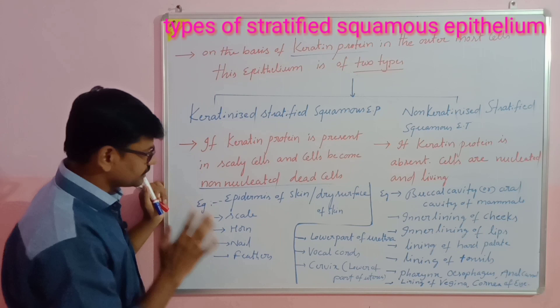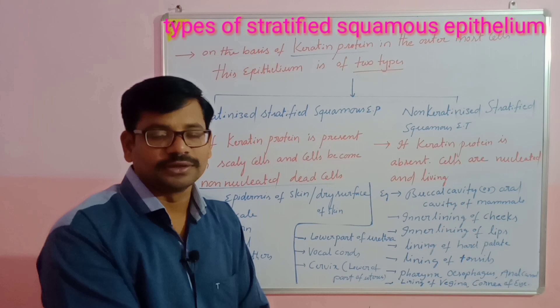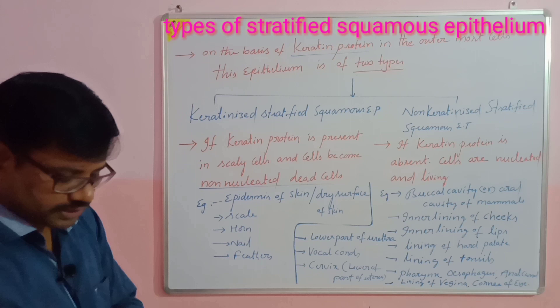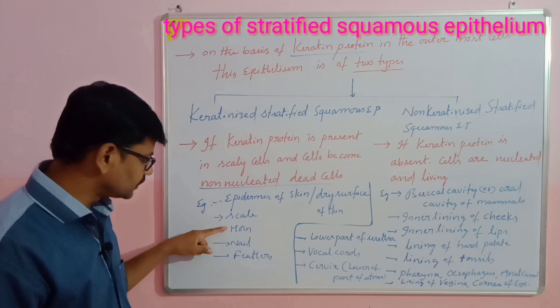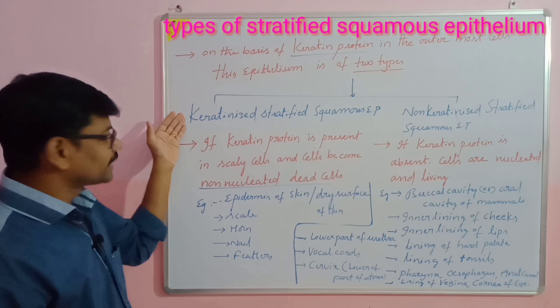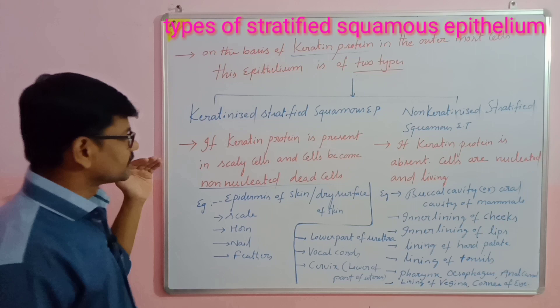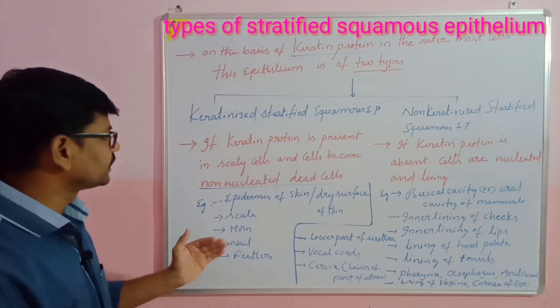Keratinized stratified squamous epithelium is present mostly in the epidermis of the dry surface of skin. Our skin is completely dry due to the presence and deposition of keratin. Scales in fish, horns in animals, nails in our body, and feathers are all made up of keratinized stratified squamous epithelium. This tissue is sometimes referred to as hornified tissue.